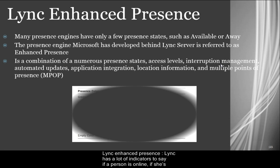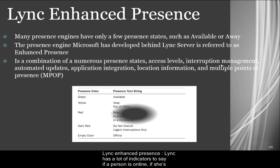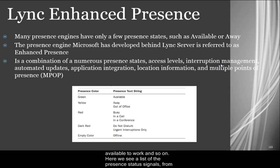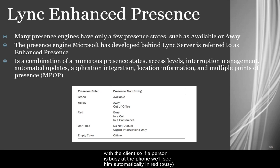Lync enhanced presence: Lync has a lot of indicators to say if a person is online, if they're available to work, and so on. Here we see a list of the presence status symbols, from green to red. In addition, we have the location information and integrations with the client. So if a person is busy on the phone, we'll see them automatically in red, or busy status.